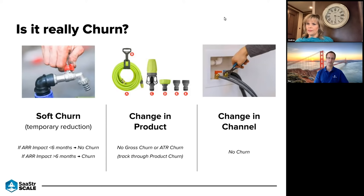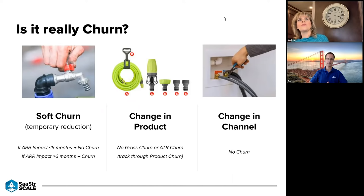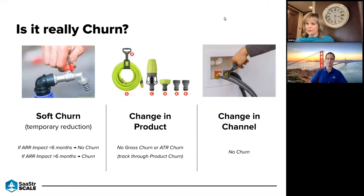The third type is a change in channel. A lot of our solutions are delivered or implemented by partners, and sometimes a customer may be happy with our solution but not with the partner and wants to move from partner A to partner B. If the partner is the account of record — we're selling to the partner and they're reselling — you can miss this if you're not engaging directly with end customers. We would look at the ARR value coming in from that customer through that channel, so if the ARR goes down because of a margin change, we'd take some churn.